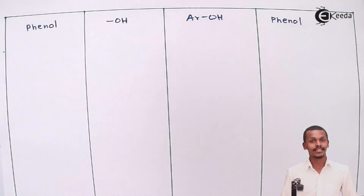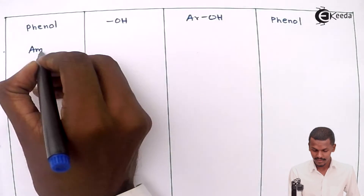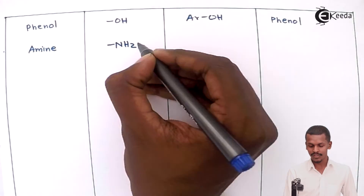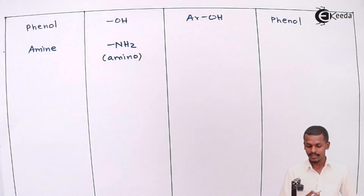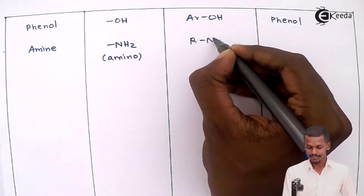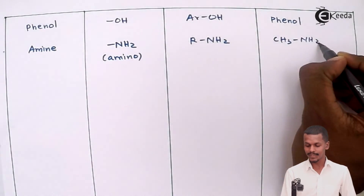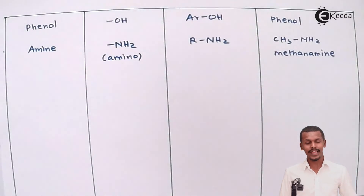The next class is amines. Amines contain the NH2 group, which is known as the amino group. The general formula is RNH2. For example, substituting R with CH3 gives CH3NH2, which is called methylamine or methanamine.